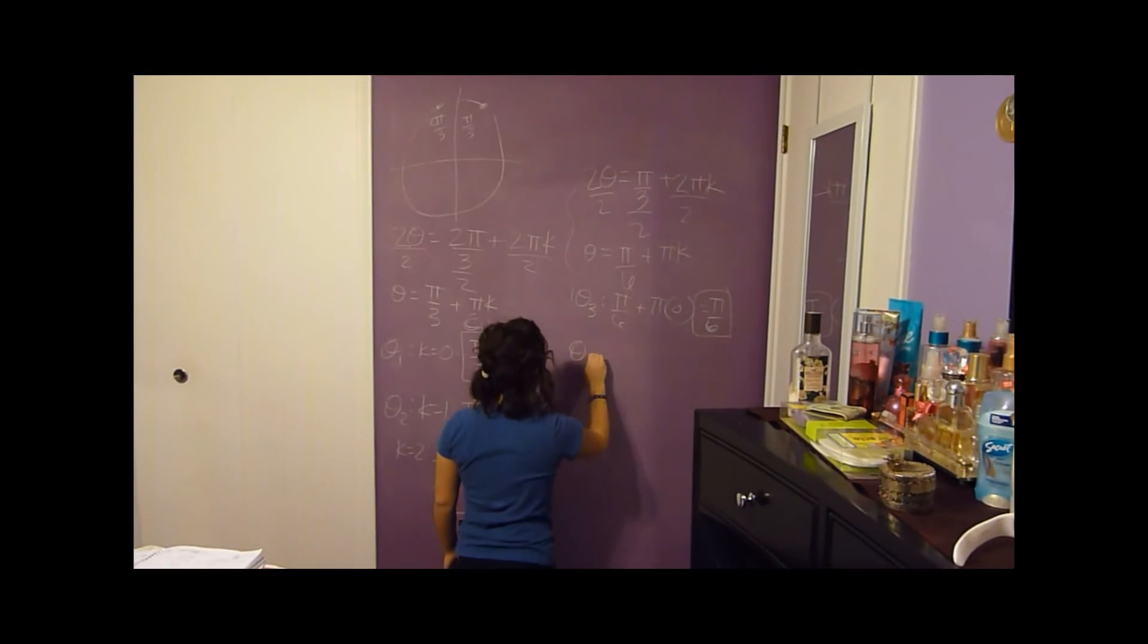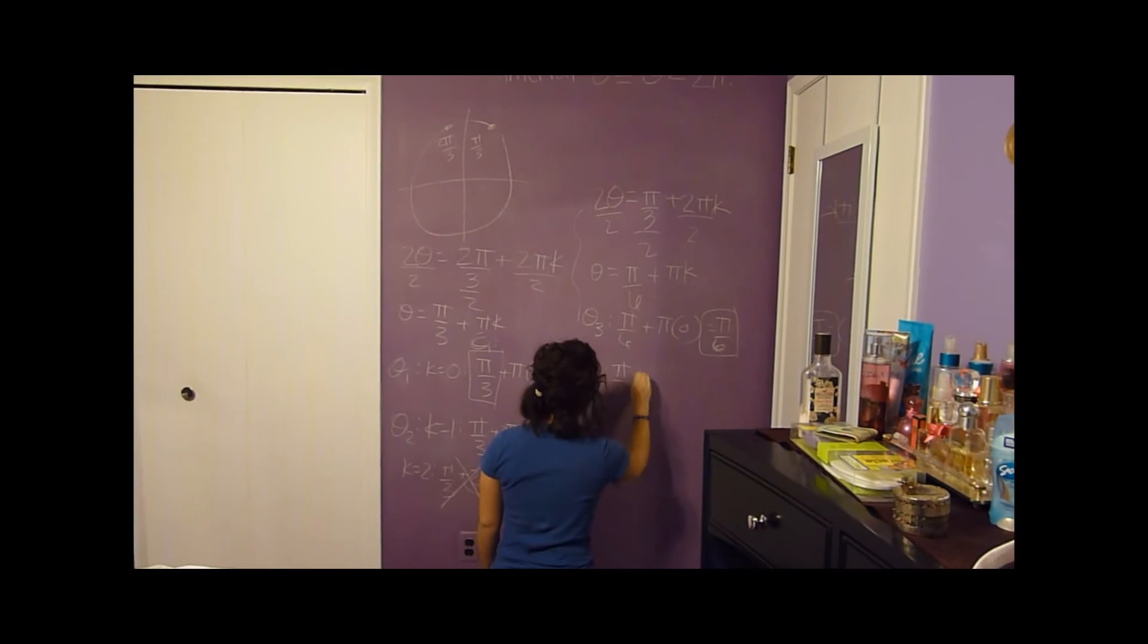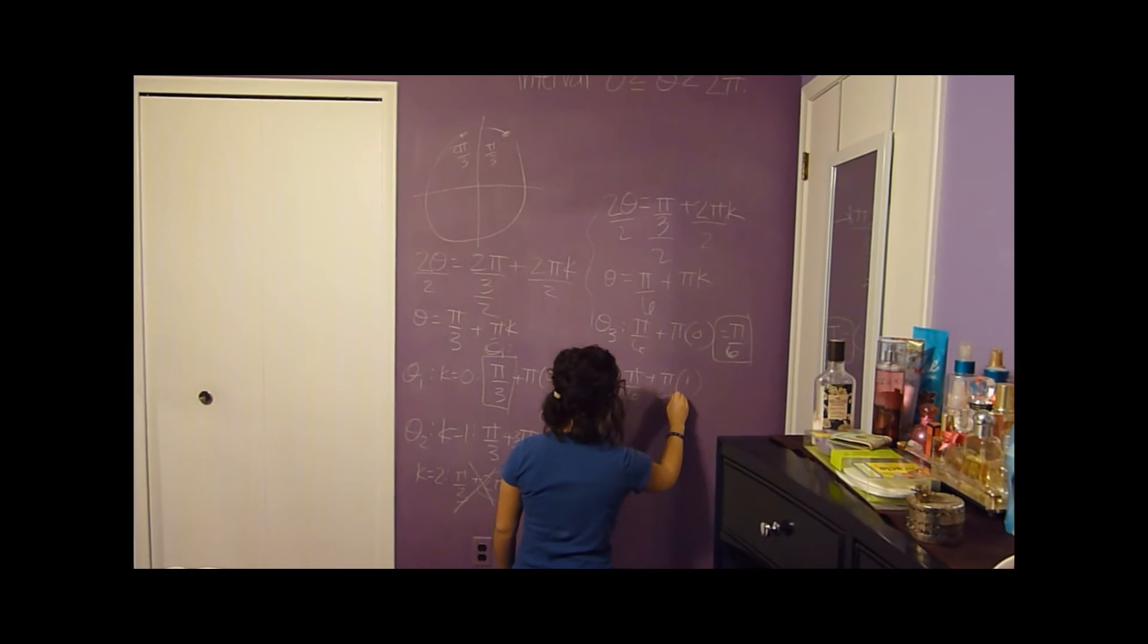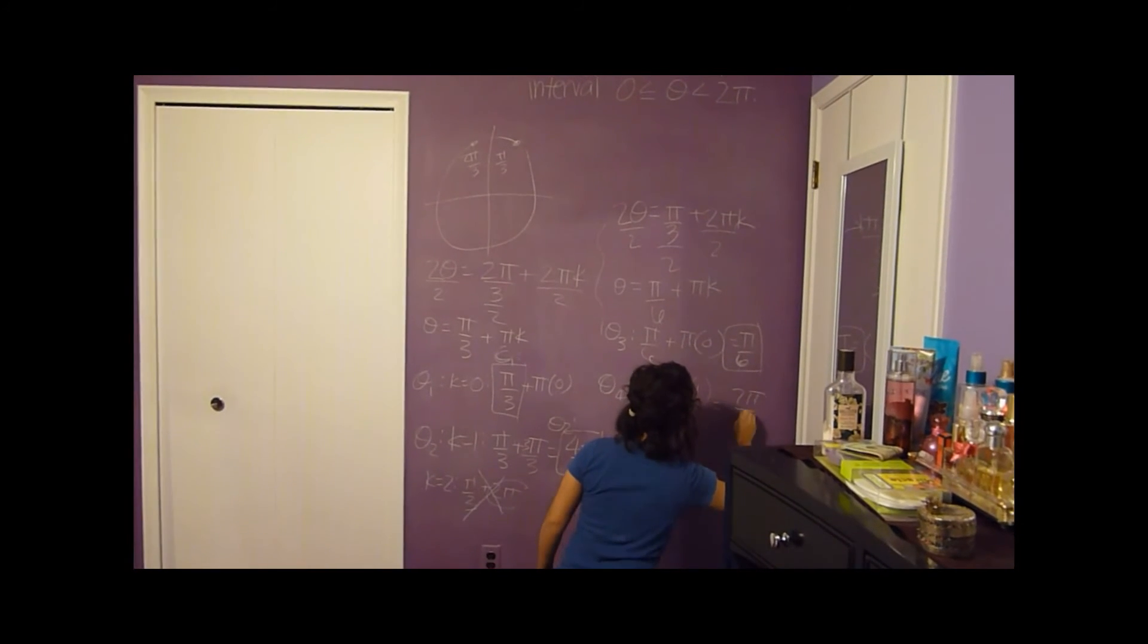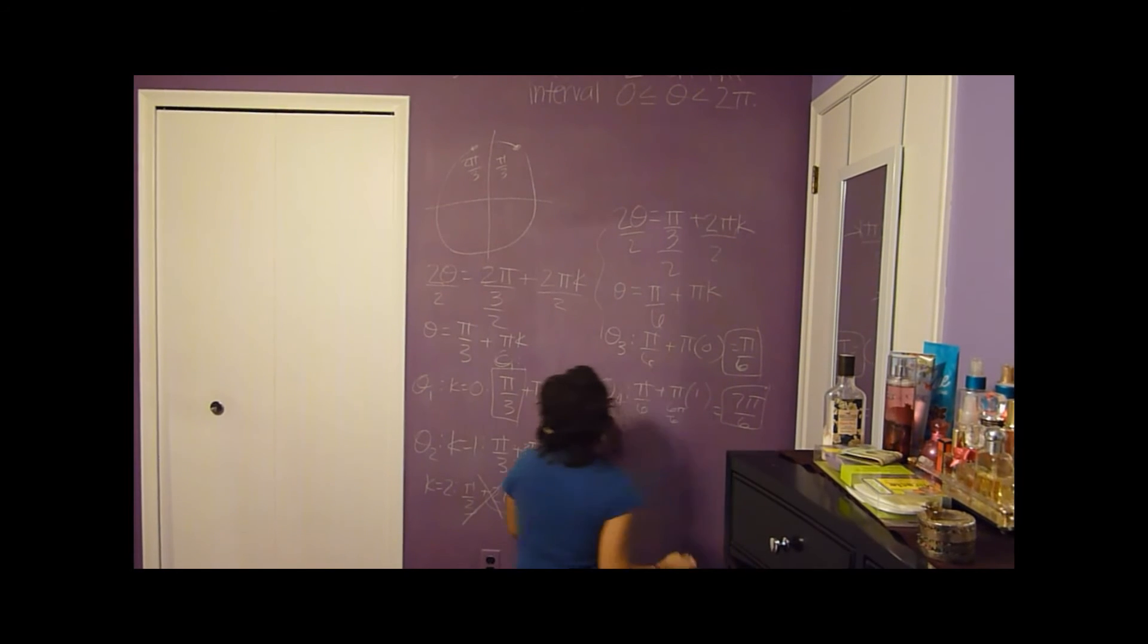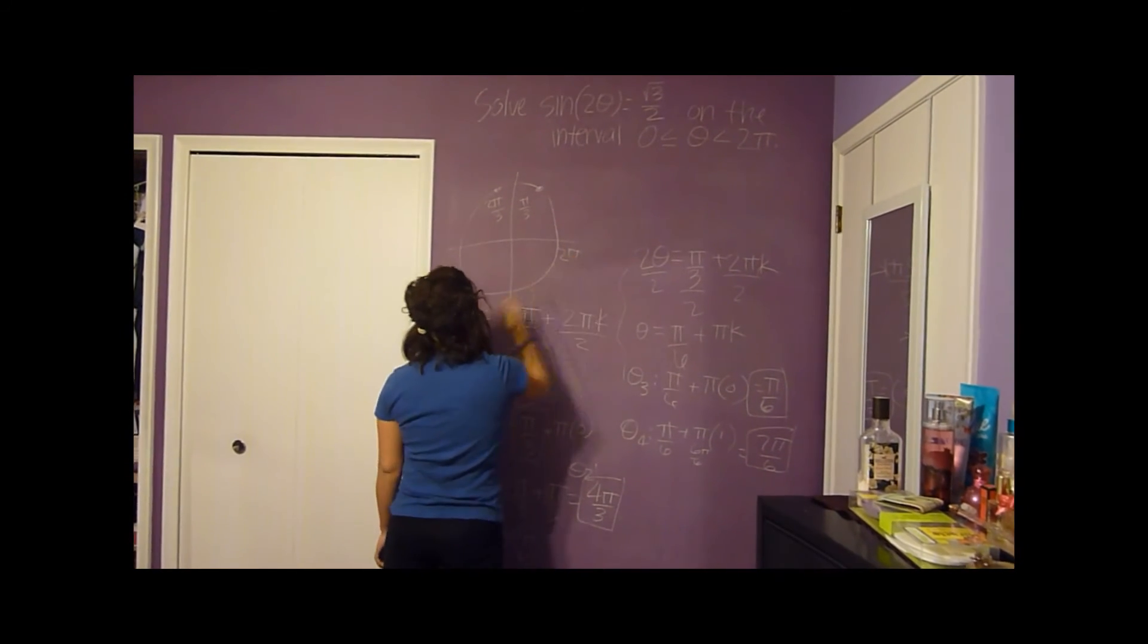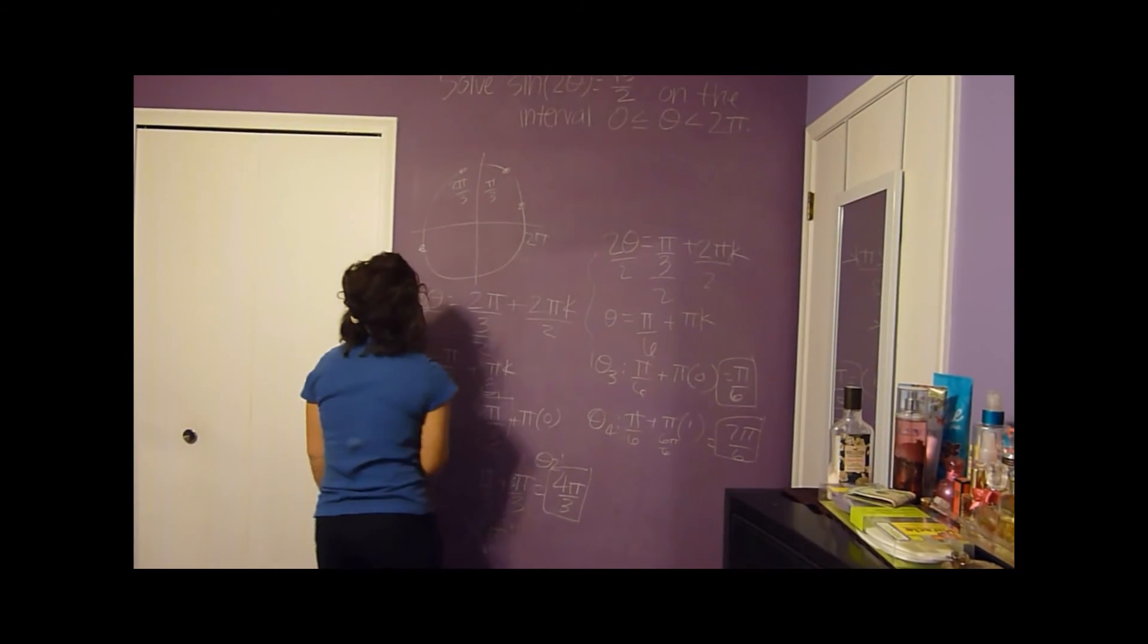And then, let's try 1. So it will be 6 pi over 6, which will get you 7 pi over 6. I'm just going to make sure that these are in your one cycle, and 7 pi over 6 is over here, so you're good.